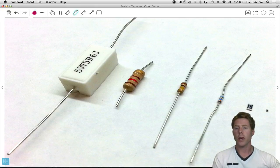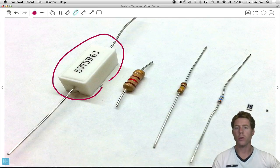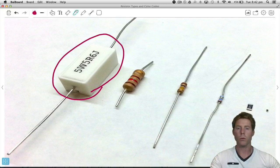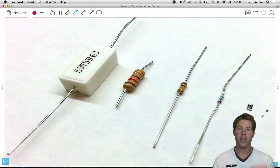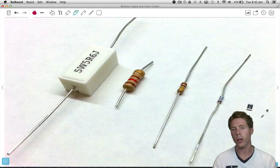So have a look at this picture I've taken. We range from a pretty big resistor over here and we keep getting smaller down to some really tiny ones like this one down here, which is like less than a millimeter in each direction.